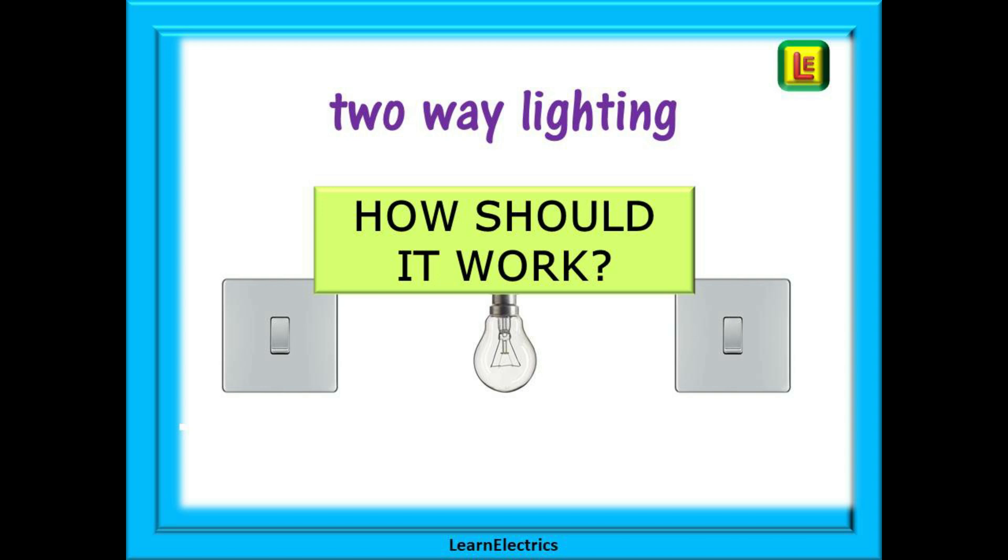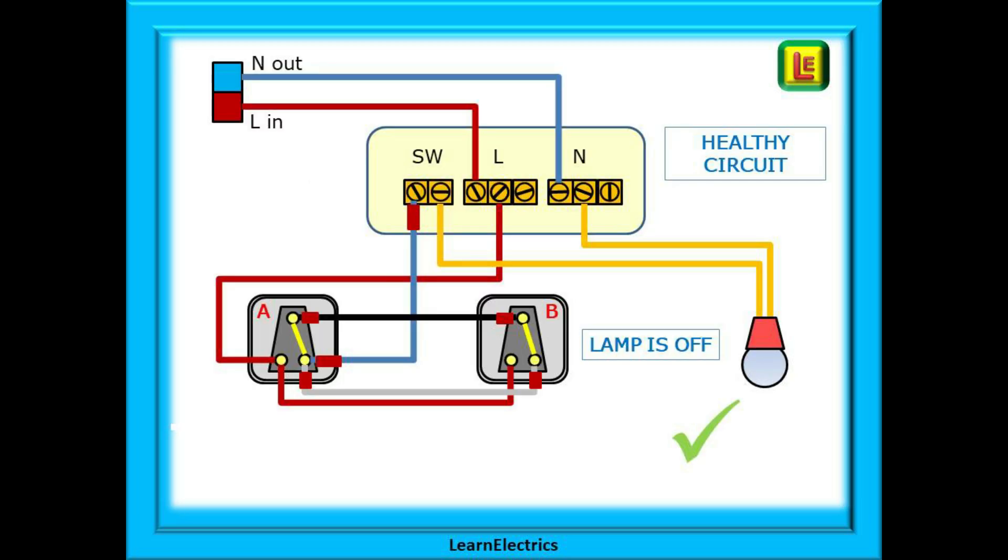Now let's look at two-way lighting and first, again, we will consider how it should work in a healthy, fault-free circuit. These healthy circuit drawings will have a green tick on them. In this example, electric enters the circuit at the top left, as before, into the live loop block and then from the live loop along the brown wire to switch A. But from switch A it cannot get any further. The switches are in the wrong positions and so the lamp is off.